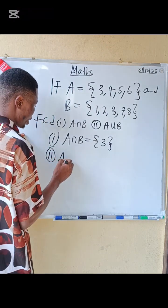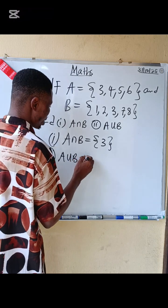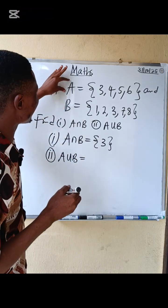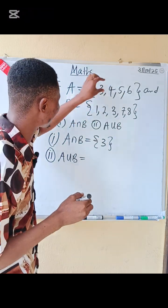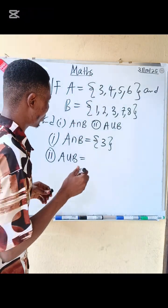We are asked to find A union B. A union B is the combination of set A and B. It means that you should add them together, combine both set A and set B together. What do we have?